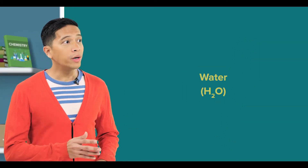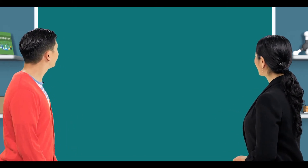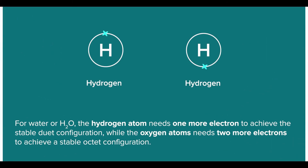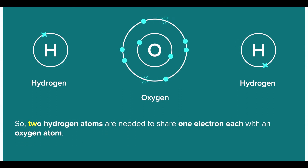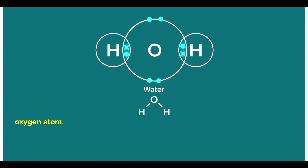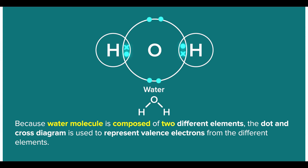Teacher, now I remember. Water, or H2O, is an example of covalent compounds. Let's review it quickly. Sure. For water, or H2O, the hydrogen atoms need one more electron to achieve the stable duet configuration, while the oxygen atom needs two more electrons to achieve a stable octet configuration. So we need two hydrogen atoms to share one electron each with an oxygen atom. Because the water molecule is composed of two different elements, we use the dot and cross diagram to represent valence electrons from the different elements.